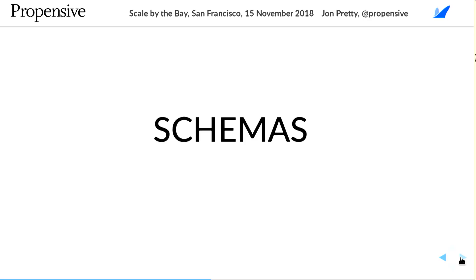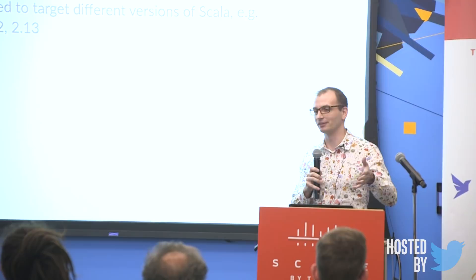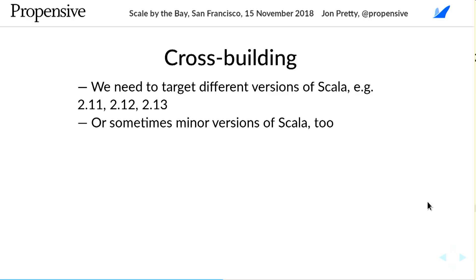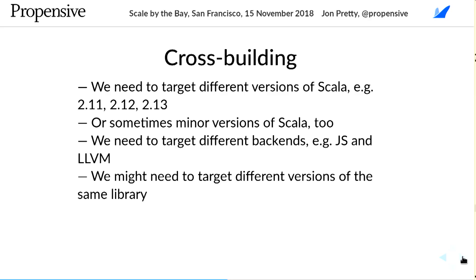Let's talk about schemas — my answer to cross-building. As Oscar mentioned, you have variations of builds that work for different backends and different versions of Scala, sometimes even different minor versions. If you're depending on the internals of the compiler you need to publish a different version for each minor version. If we're using Scala.js or Scala Native we have different backends, making the whole building process with SBT more complicated. You may even need to depend on different versions of the same library.